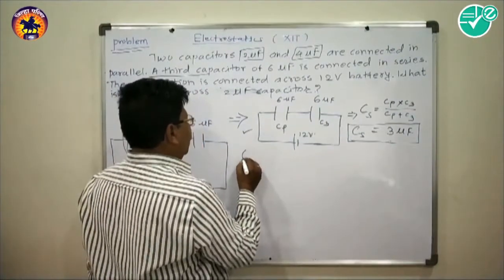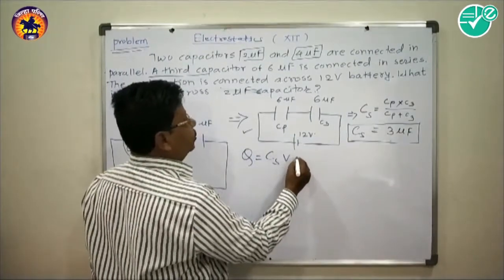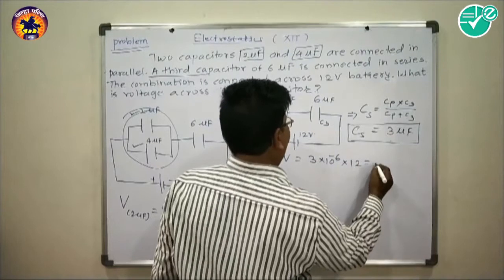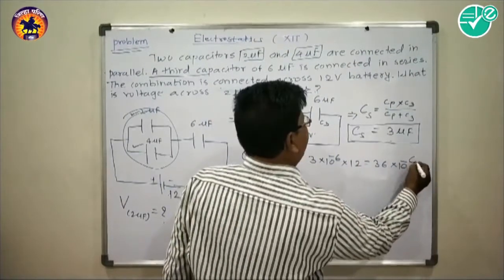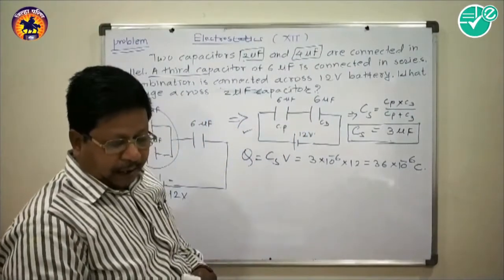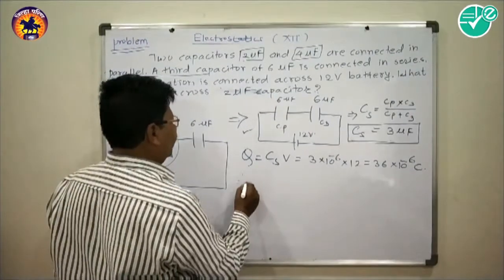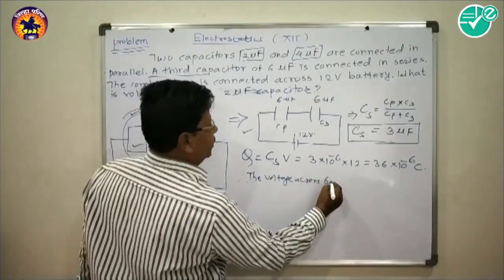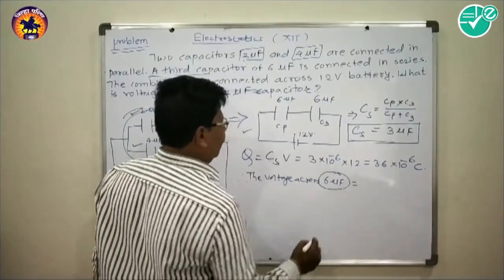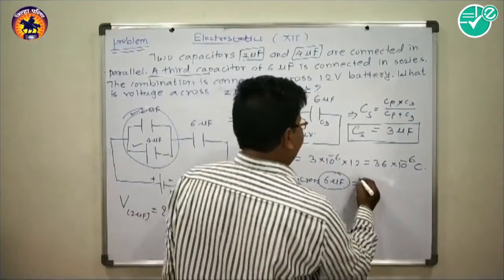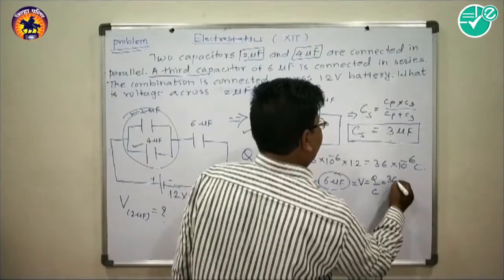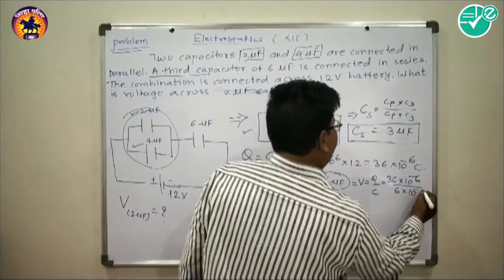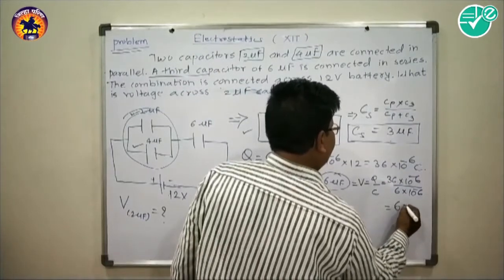In series, total charge Q = Cs × V = 3×10⁻⁶ × 12 = 36×10⁻⁶ coulombs. The voltage across the 6 microfarad capacitor is V = Q/C = 36×10⁻⁶ / (6×10⁻⁶) = 6 volts.